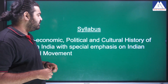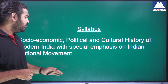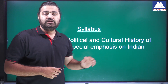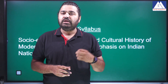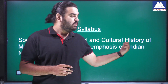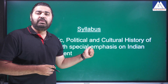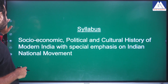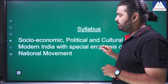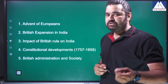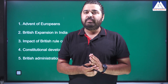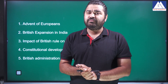So, modern history — this is the complete syllabus. In modern history we will divide into 25 topics, and we will start with the advent of Europeans. Modern history covers from the advent of Europeans in 1498 up to independence in 1947.